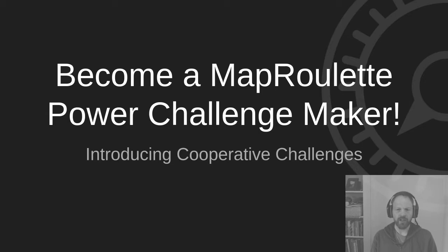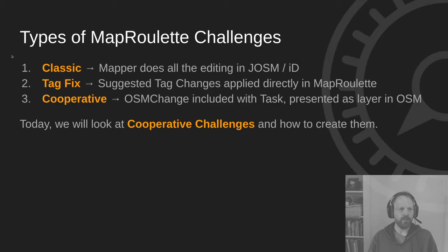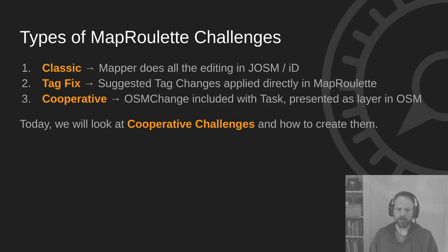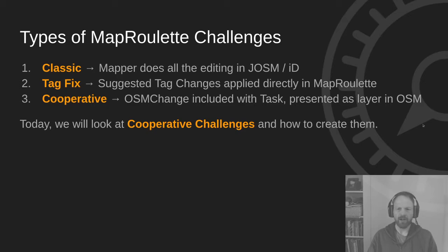I'm going to introduce cooperative challenges today. So what are those? We have three types of MapRoulette challenges: there's classic challenges, which you're probably familiar with, that let the mapper do all the editing themselves. There's tagfix challenges, which I won't be talking about today. And then there's cooperative challenges that already have the task data you would want mappers to add, included as an OSM change, and they can be presented as a layer in JOSM. Right now only JOSM is supported — iD is not supported yet. So it can save mappers a bunch of work by already doing a lot of the work for them. That's why they're called cooperative.